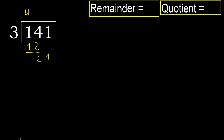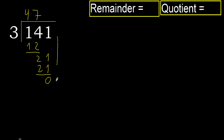Bring down 1 to get 21. 3 multiplied by 8 is 24, which is greater. Multiply by 7: 21 is not greater. OK, subtract 0. Next — there is no number, therefore finish.